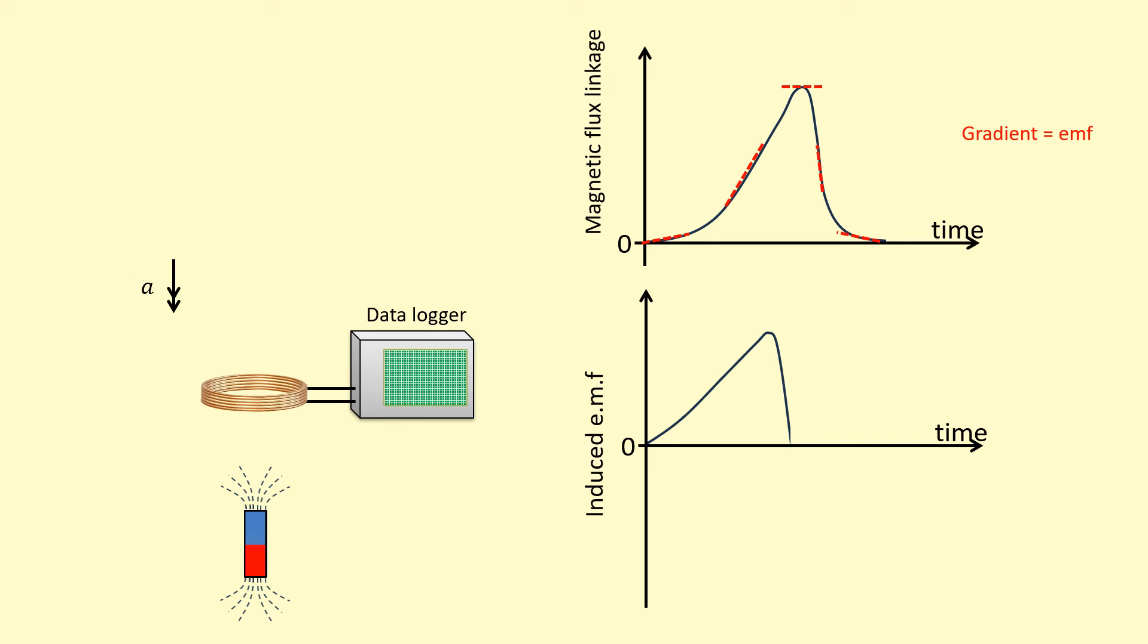And then after that, it's a very sharp decrease in magnetic flux linkage. And because it's a very steep negative gradient, we're going to have a very large EMF induced in the negative direction like so.